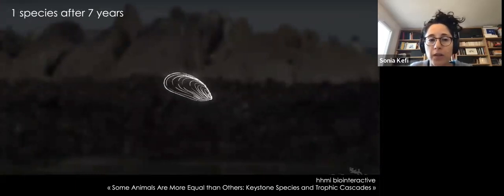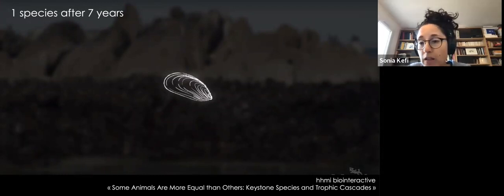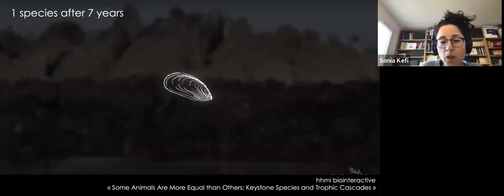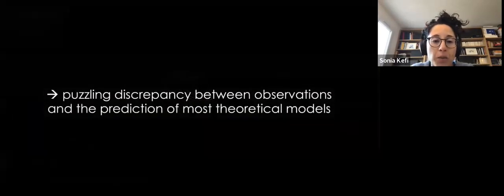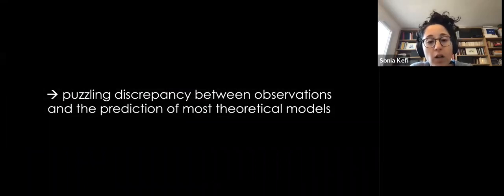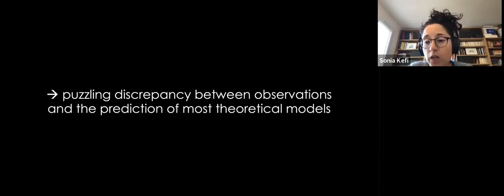In agreement with Ian Donohue's study, this is a classical example of an experiment where removing a single species — a top predator — destabilized an entire community and led to a large number of secondary extinctions. There is a puzzling discrepancy between these observations, where top predators can lead to a large number of secondary extinctions, and the prediction of most theoretical models, in which removal of top predators leads to much fewer secondary extinctions.